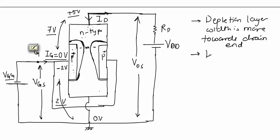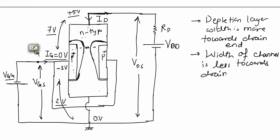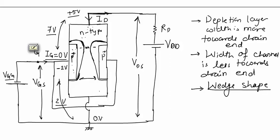The channel has greater width towards the source end and lesser width towards the drain end. The depletion layer width is more towards the drain end and the channel width is less towards the drain end. Next, we will draw the characteristics for the JFET.